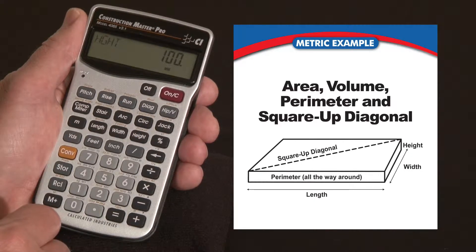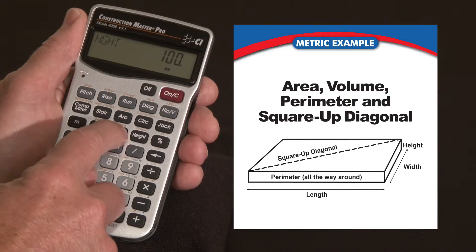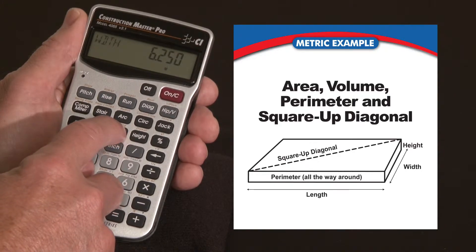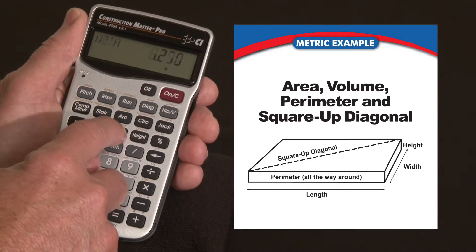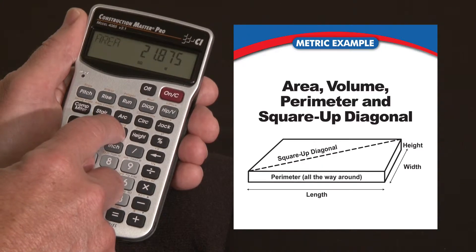So now we're set for a whole lot of answers. Let me start with the width key. I press it once, it reconfirms the width, that's 6.25 meters. But now the next press gives me the surface area. You've got 21.875 square meters.